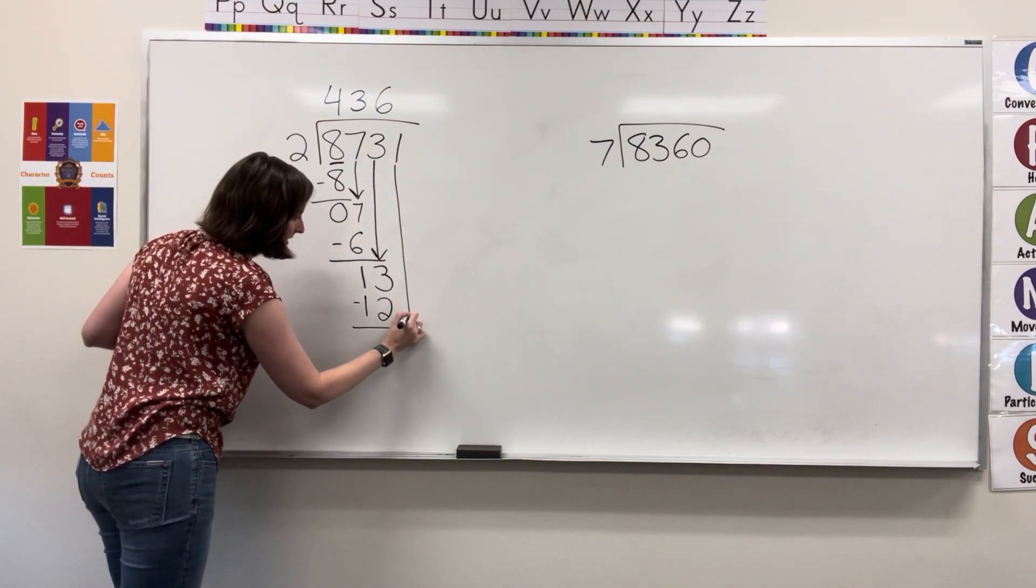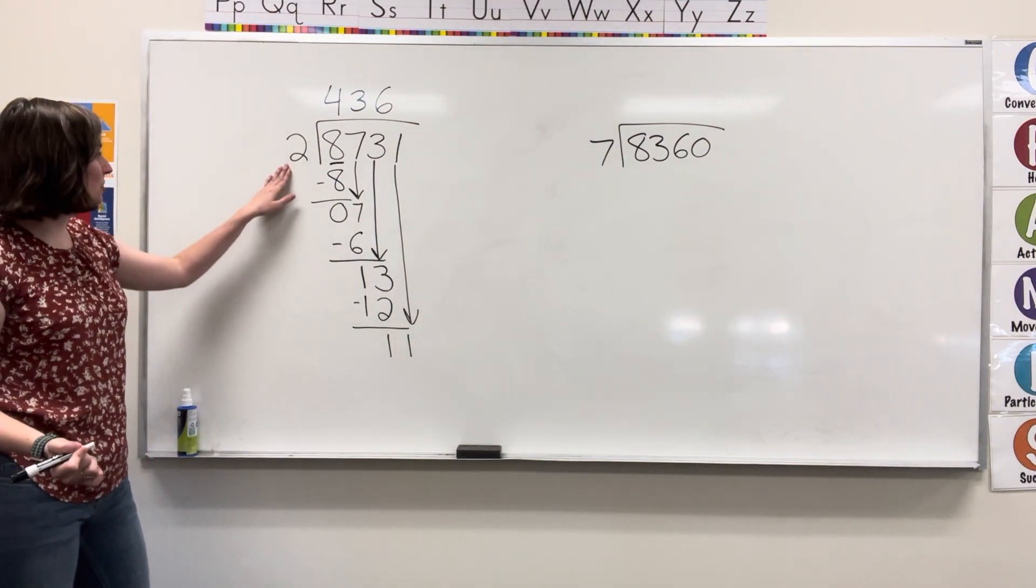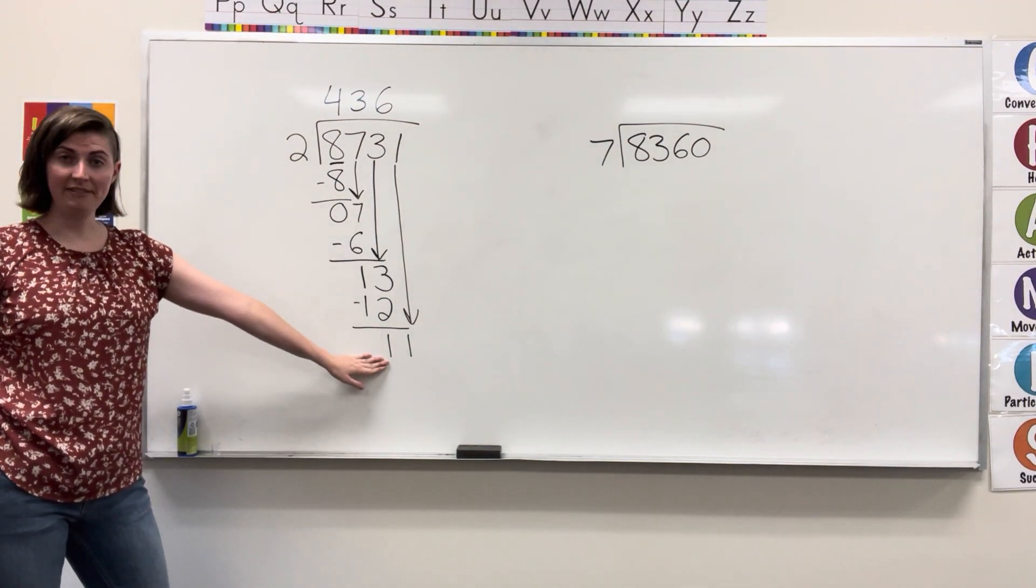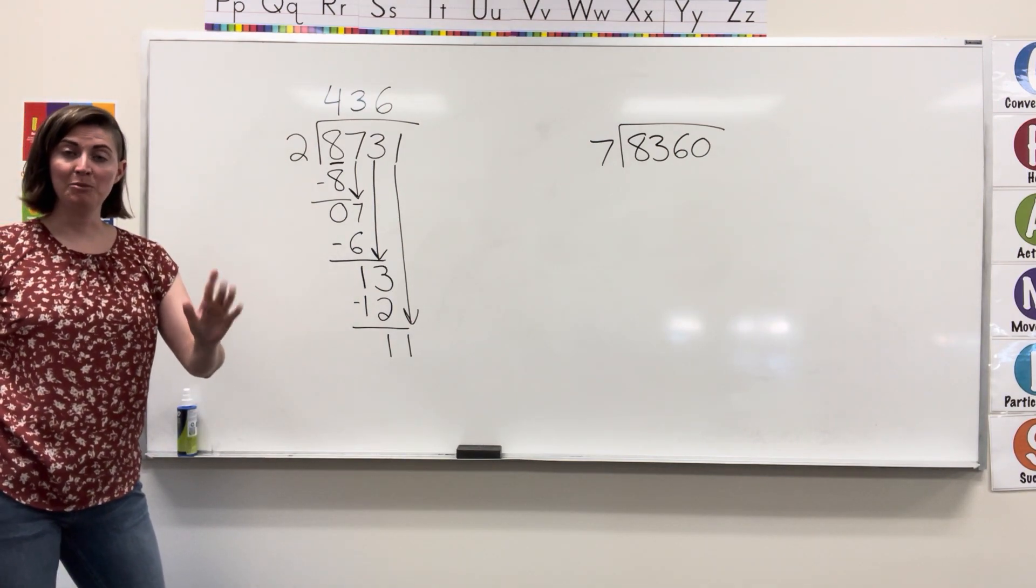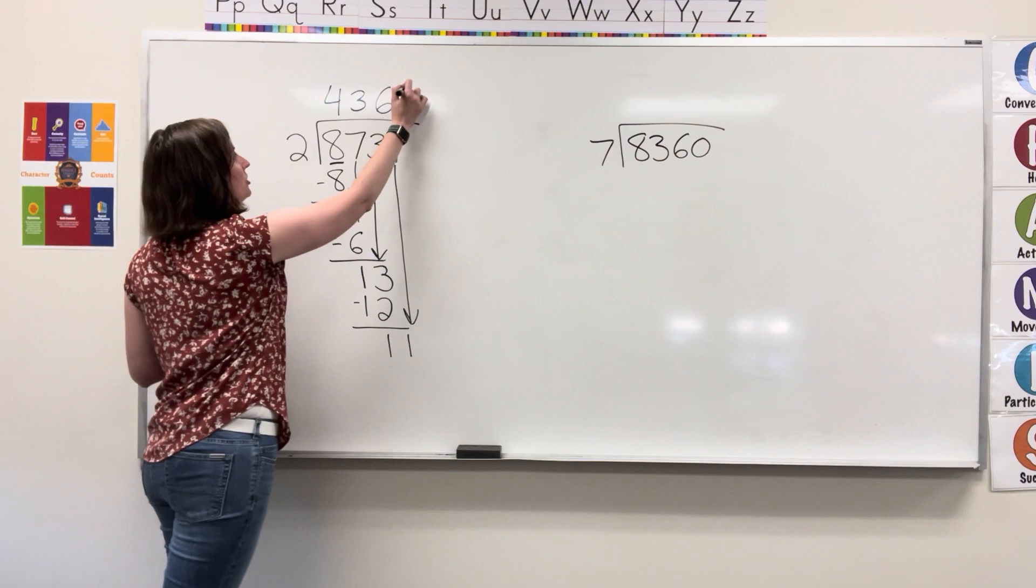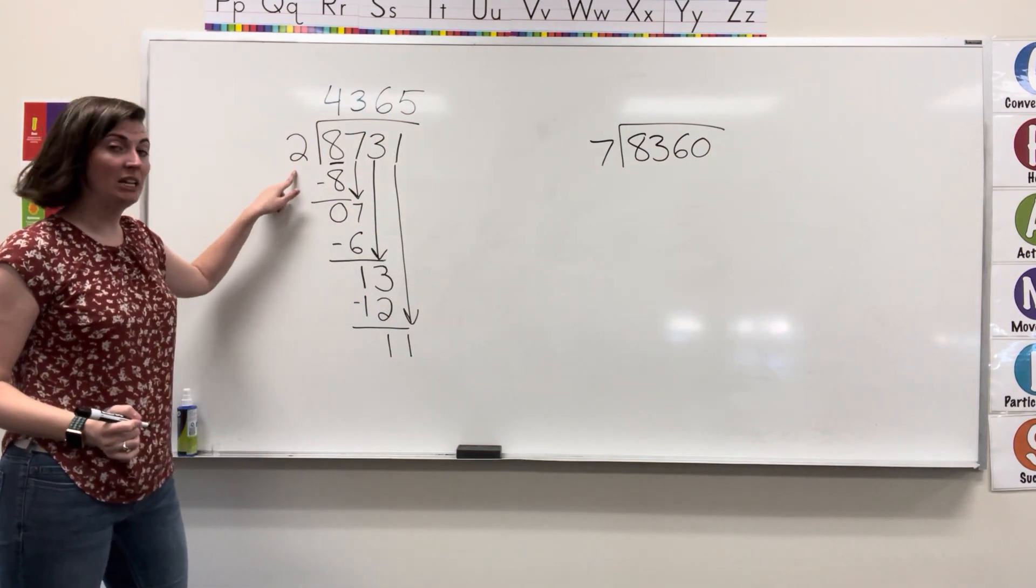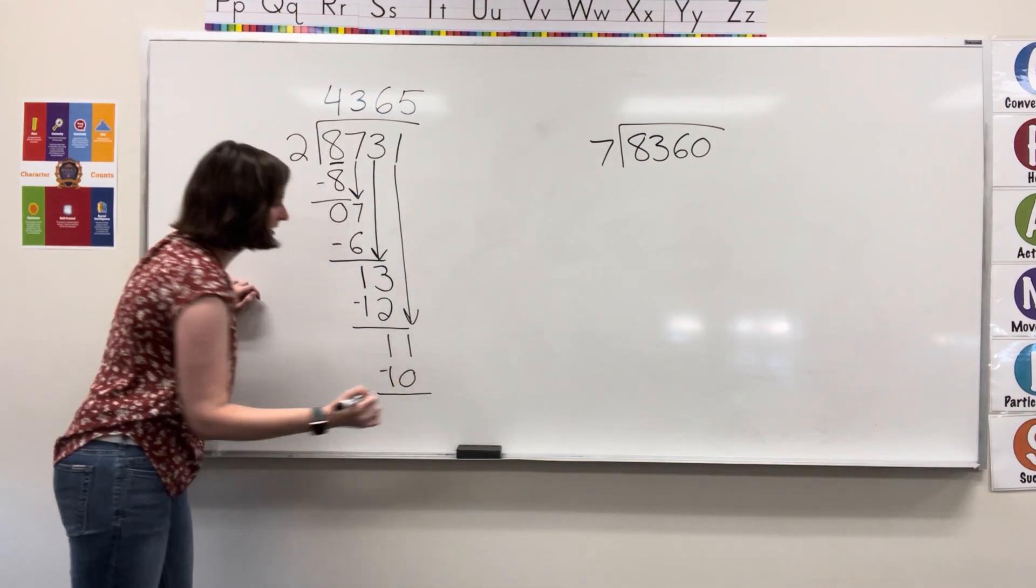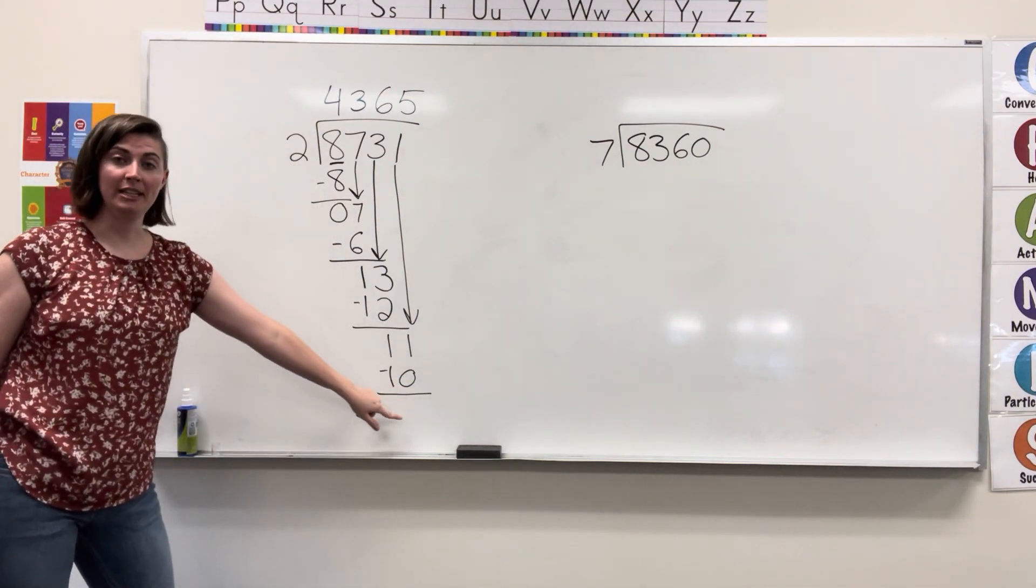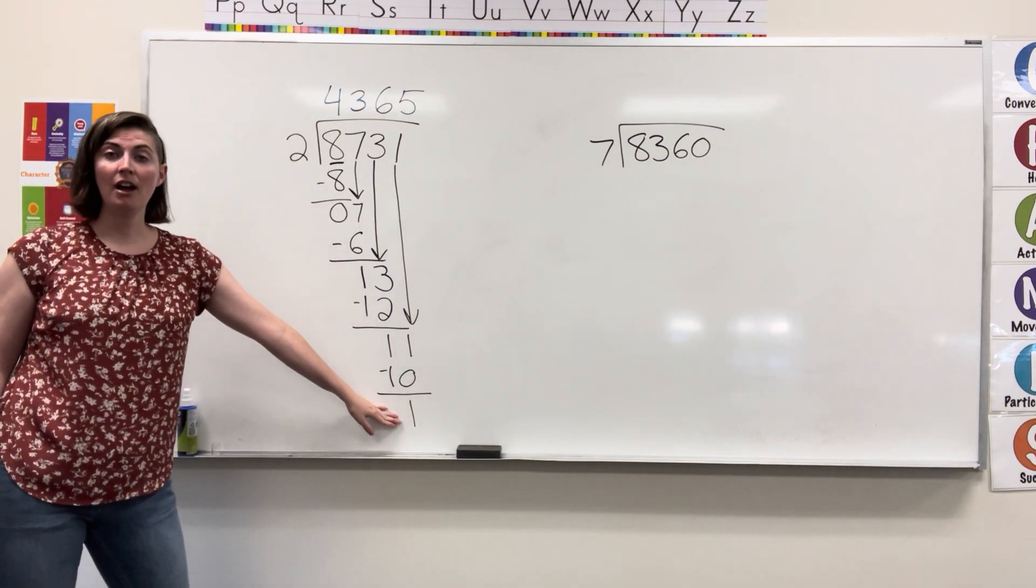I still have digits to bring down. And now I'm looking at two going into eleven. Two fits into eleven five times without going over. So I write that five. Five times two equals ten. I subtract. Eleven minus ten gets me one. I'm left with the remainder of one.